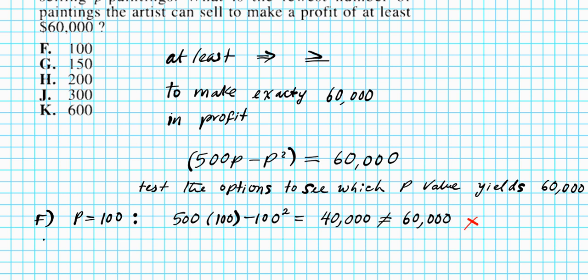And then we go to the next one. Option G. P is equal to 150. So we have 500 times 150 minus 150 squared. Let's not forget the parentheses. If we plug this into our calculator, we'll end up with 52,500. And that is not equal to 60,000 either. So this is also a fail.